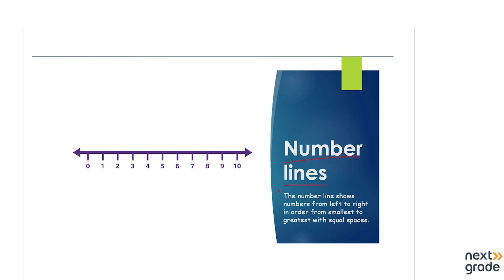The number line is a line that shows numbers from left to right. You can see over here that it starts from 0 and moves to the right side. The next part of the definition is that numbers are in order from smallest to greatest — 0, 1, 2, 3 — moving towards the greatest numbers, with equal spaces.